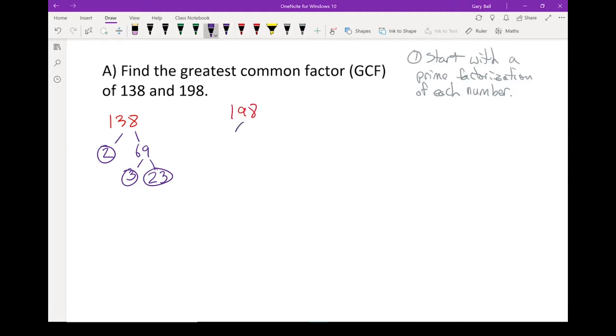Let's do 198. Same thing. That can be broken down into 2 and 99. 2 is a prime number. 99 can be broken down into 3 and 33. 3 is a prime number. 33 can be broken down into 3 and 11. And both of those are prime numbers. I now have my prime factorization.